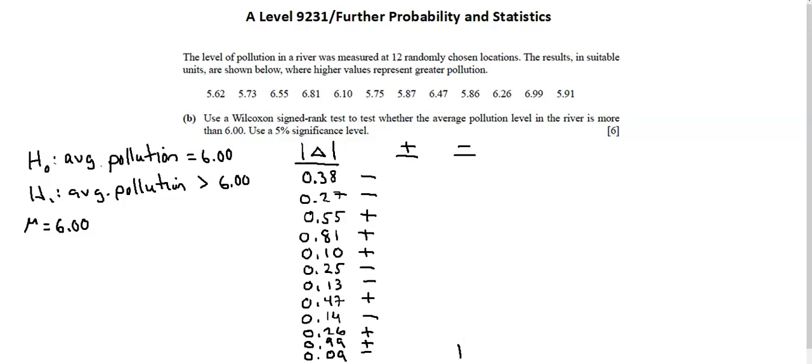That difference, the smallest absolute value difference, has a ranking of 1. It relates to a value less than the mean, so I'm putting that in the negative column. Moving on, I see a 0.10. That's the next largest difference in absolute value terms. The notation is positive.